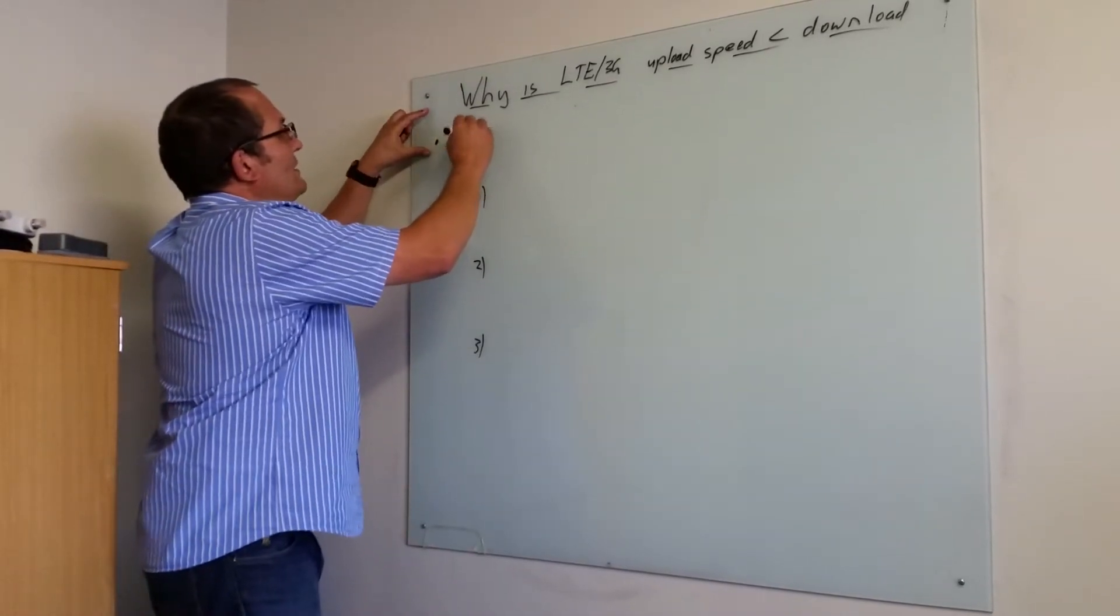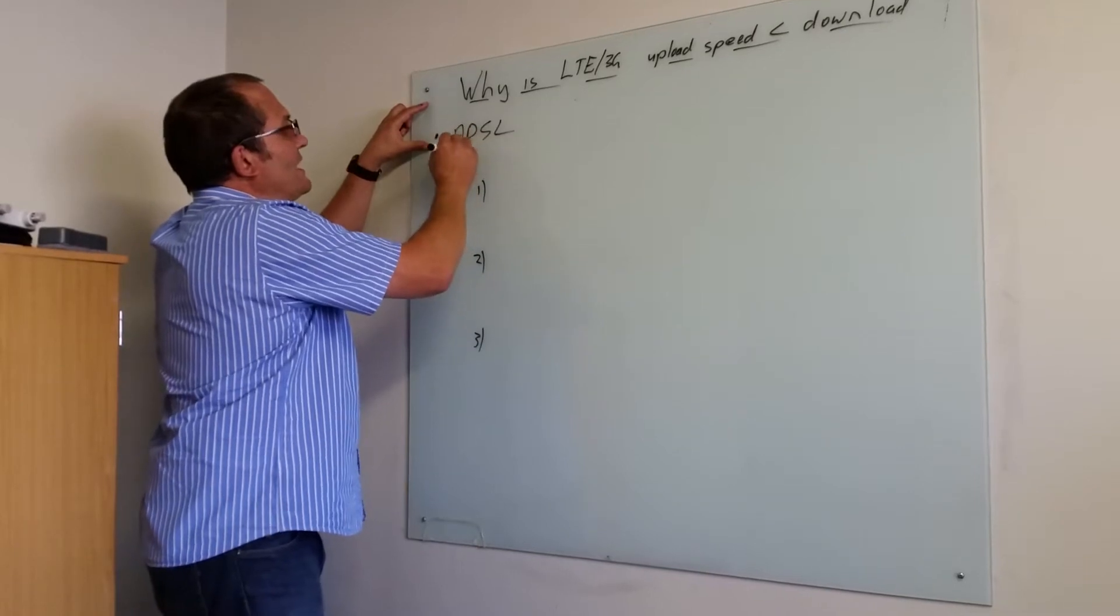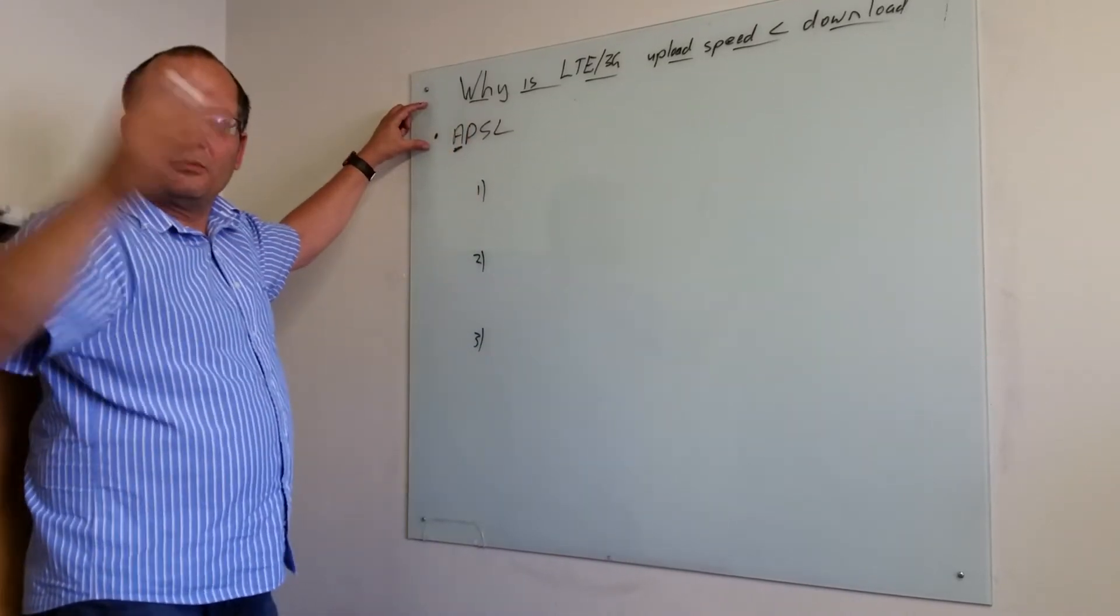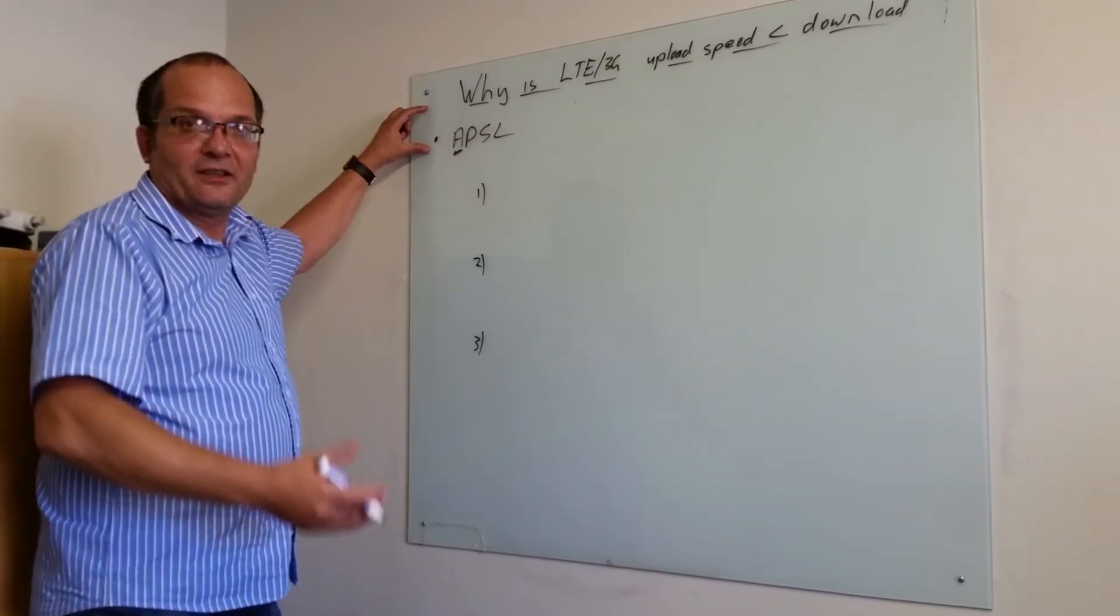That's why ADSL, the A actually stands for asymmetric, meaning that it can do much more data down than what it can do up.